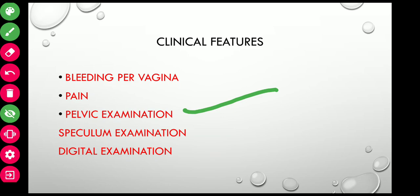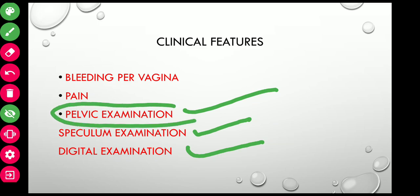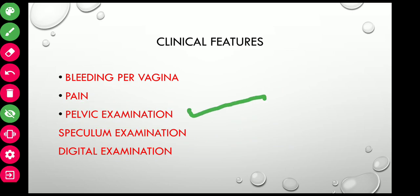Pelvic examination should be done gently. Speculum examination reveals any bleeding escaping through the external os. On digital examination, uterine size corresponds to the period of amenorrhea and the uterus and cervix feel soft. Pelvic examination should be avoided when ultrasonography is available, as it may increase the chances of infection.